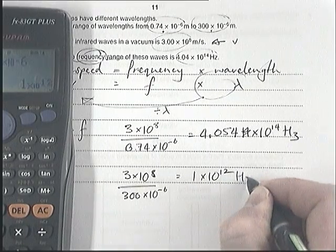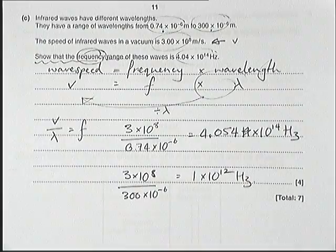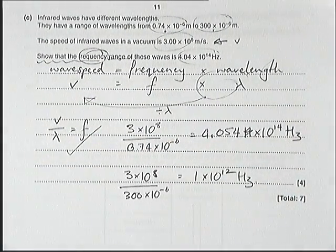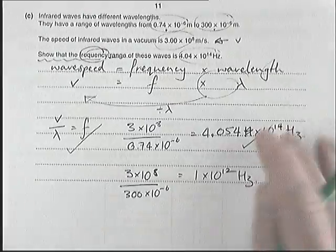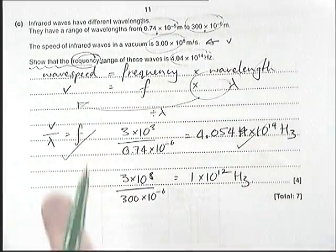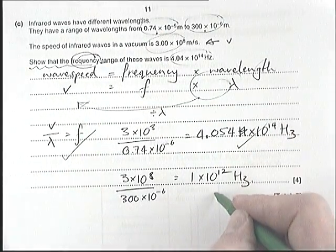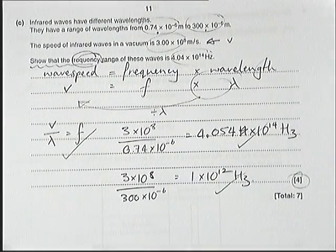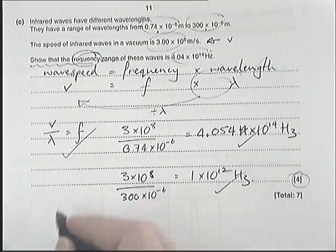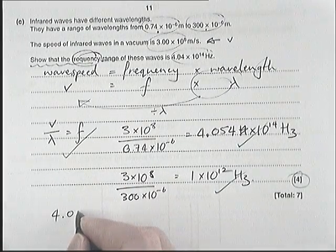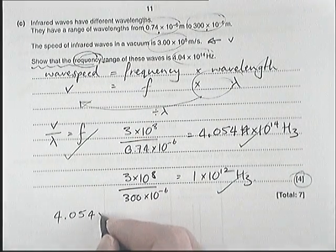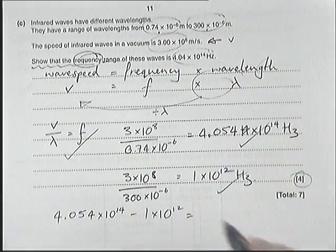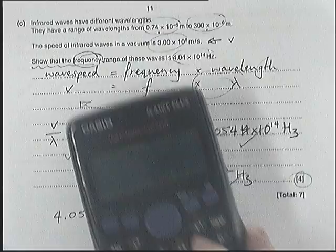So far we've got three marks. We've shown that we can rearrange and use the formula like that. We've got our answer for the smallest wavelength, we've got our answer for the longest wavelength, and now we just need our fourth mark, which is subtract this from that. So 4.054 × 10^14 take away 1 × 10^12 equals, doing the calculator, 4.054...